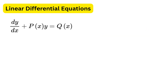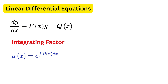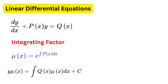We multiply the whole equation by a special function called the integrating factor, denoted mu(x), which equals e raised to the integral of p(x) dx. After finding mu(x), simply use the formula: y times mu(x) equals the integral of q(x) times mu(x) dx. Let me show you an example.